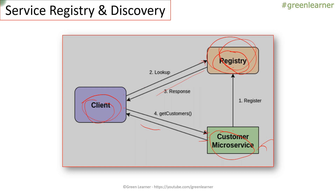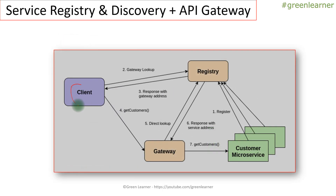From the last video we also understood about the API gateway. So where does the API gateway fit in with service registry and discovery? Here we have the client, we have the registry, and the gateway is also a kind of service. All the services get themselves registered with the registry, and the gateway also gets registered with this registry service.